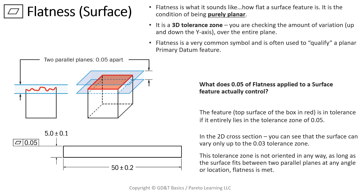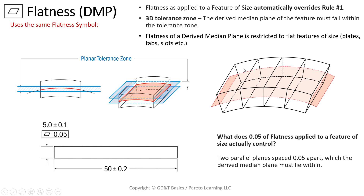This is the one that everybody seems to get, and it sounds like you did this type of inspection on the top and then on the bottom and reported the flatness error for both. But let's take a look at what DMP flatness is. Flatness as applied to a feature of size automatically overrides rule number one. Remember when we were talking about a surface — rule number one is still in effect. But now that this has been applied, it's going to void rule number one in your CMM software.